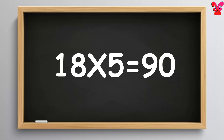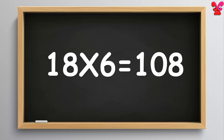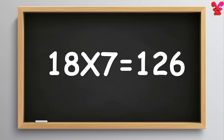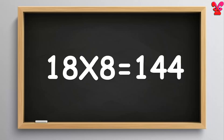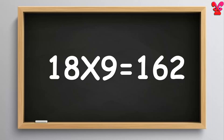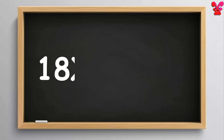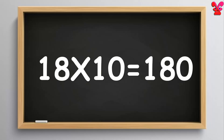18 fives are 90. 18 fives are 90. 18 sixes are 108. 18 sixes are 108. 18 sevens are 126. 18 sevens are 126. 18 eights are 144. 18 nines are 162. 18 nines are 162. 18 tens are 180. 18 tens are 180.